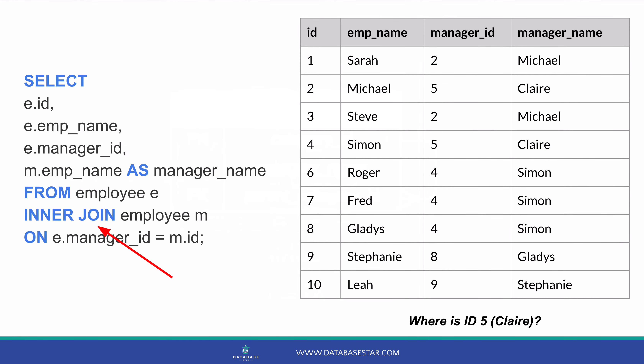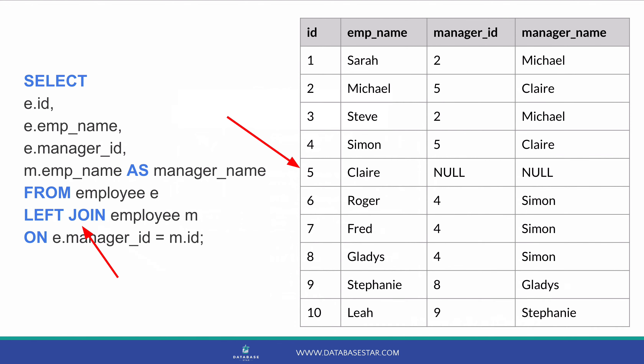One final thing to mention is that in our earlier query, we used an inner join. This will join all records where there is a match on both sides. But sometimes a record won't have a matching record in the table. An employee may have a null value for the manager ID if they are a CEO. A category may have a null value for the parent category ID if it's the top-level category. If you use an inner join, then these top-level rows won't be shown. If you want these rows to be shown, we need to use an outer join — either a left or a right outer join, depending on how the query is written.